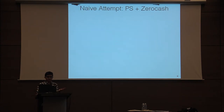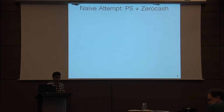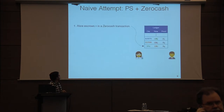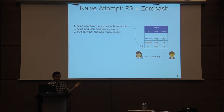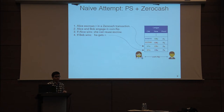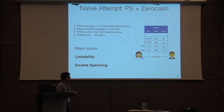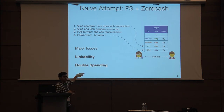The naive idea would be to take the Parson-Shalat protocol and replace Bitcoin with ZeroCash — so Alice escrows her value in a ZeroCash transaction, they engage in the coin flip as before, and if Bob wins he gets to redeem it. This doesn't work for two reasons: you don't have anonymity, and the customer can double spend.